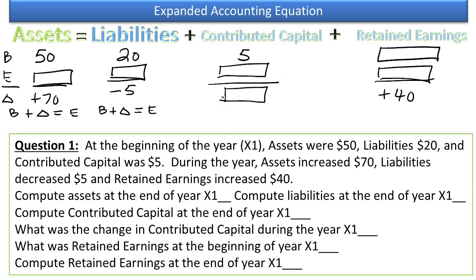Now let's read the question and see what it's actually asking for. Compute assets at the end of the year, X1. Since we know the beginning to be 50, we know the change to be 70, therefore we know that the ending is 120. 50 went up by 70 to get to 120. Let's go ahead and put that number in here, 120. Compute liabilities at the end of the year, X1. We know the beginning was 20. It reduced by 5 to get down to the ending of 15.